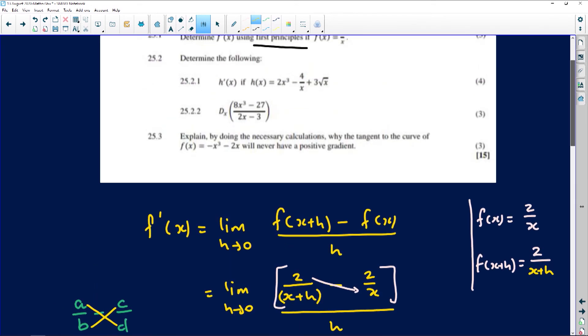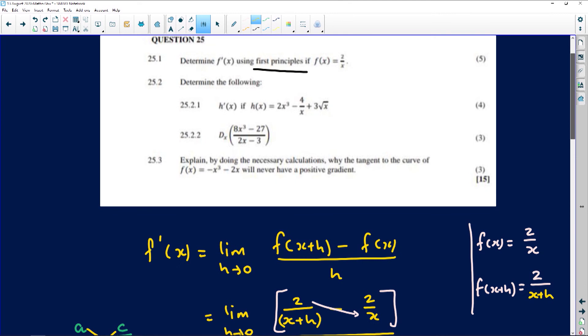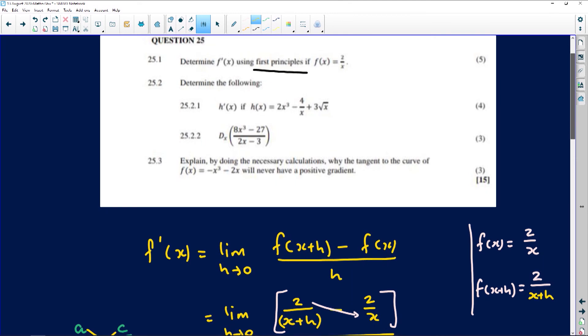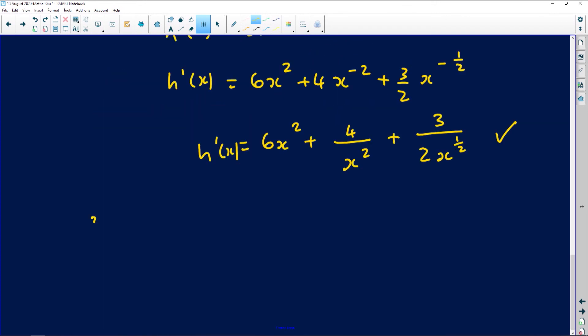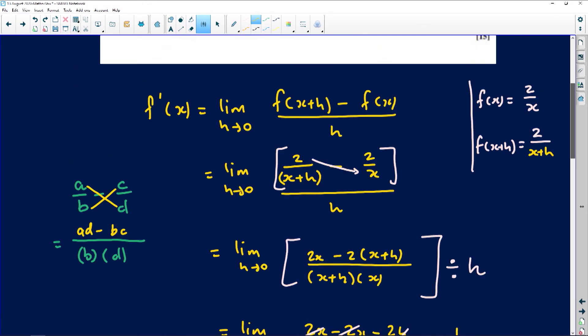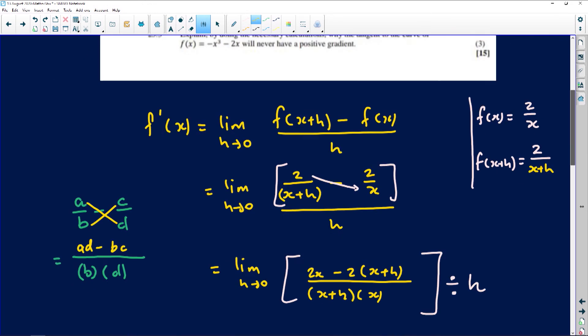Now the last question. Question 25.2.2. 8x cubed minus 27. The third one says we need to derive 8x cubed minus 27 over 2x minus 3.